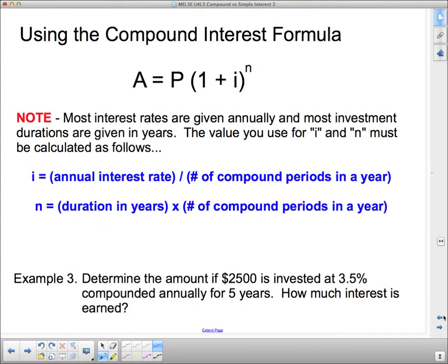And n is the number of compound periods per loan. Now, you have to be careful when you're using this, so we're going to go into using the compound interest formula. Most interest rates are given annually, and this in the formula is supposed to be the compound interest rate.